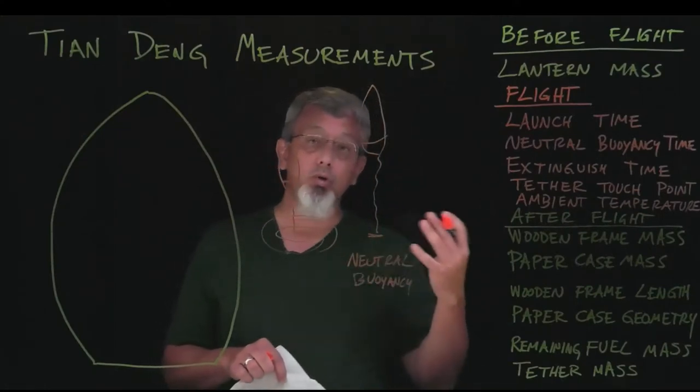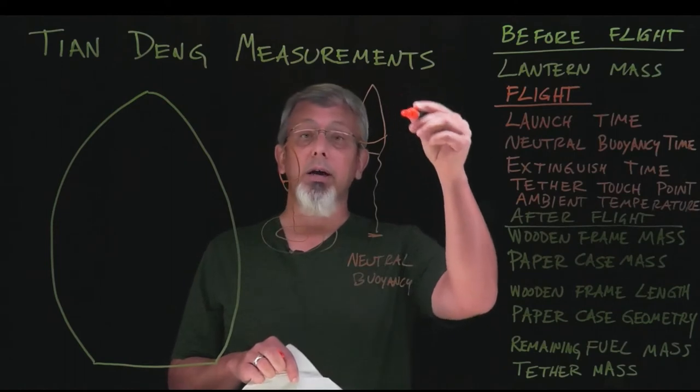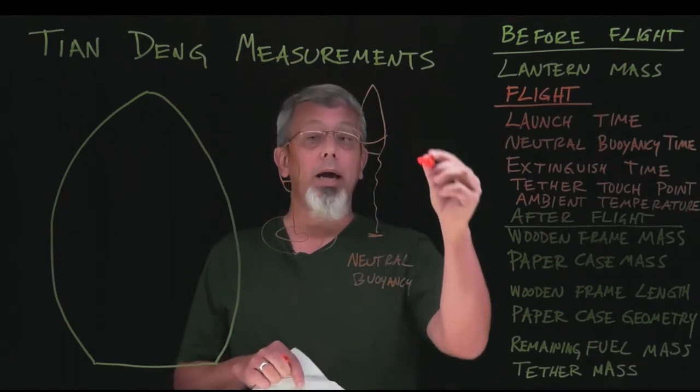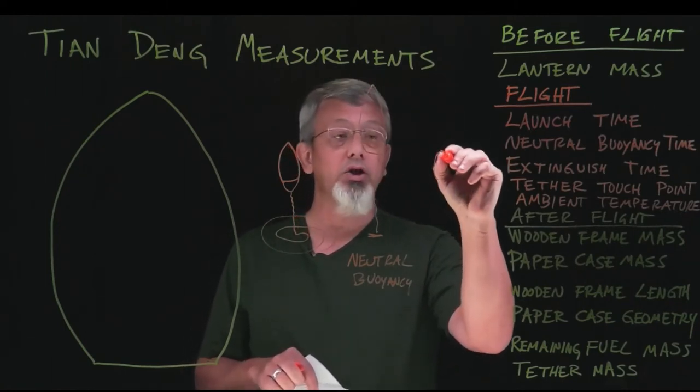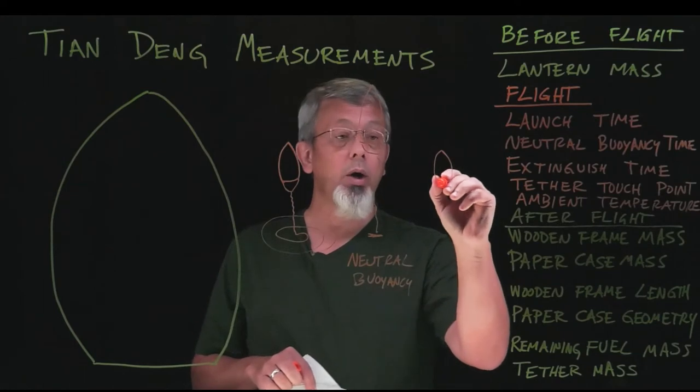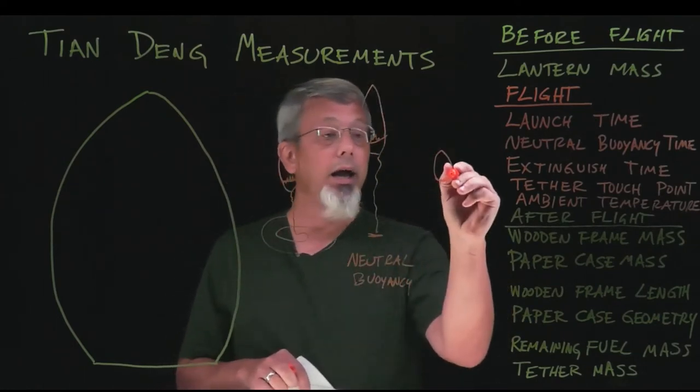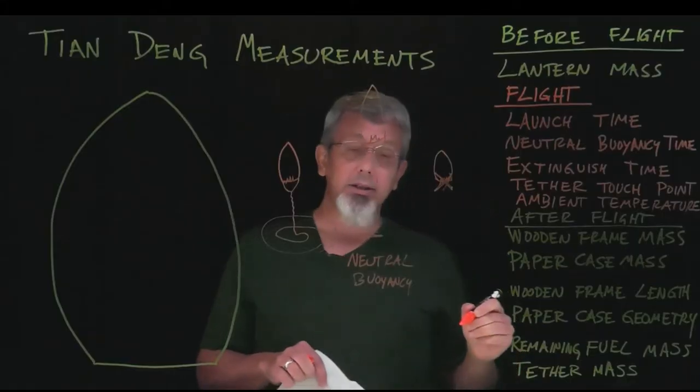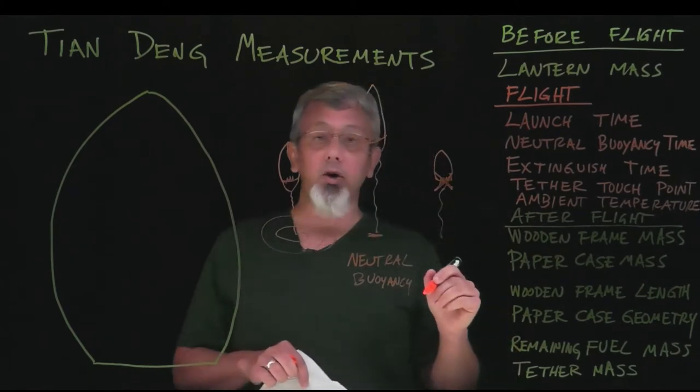And then after it reaches neutral buoyancy, after a period of time, it will start to sink and come down. When you're pretty clear it's not going to go any higher, you can go ahead and bring it back down using the tether very gently to bring it back down to the ground. And then as soon as you do so, you're going to take the flame that's burning inside it and extinguish that flame. So that's actually three points in time that we would like you to record.